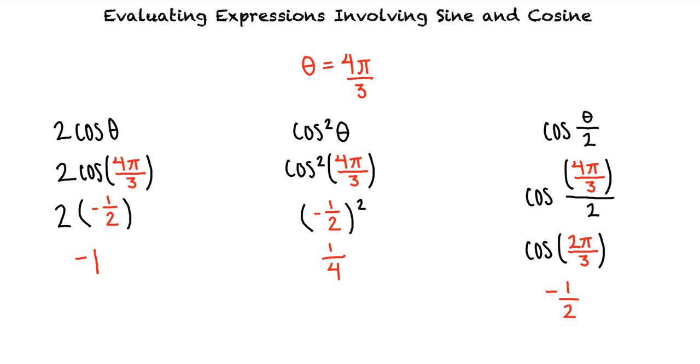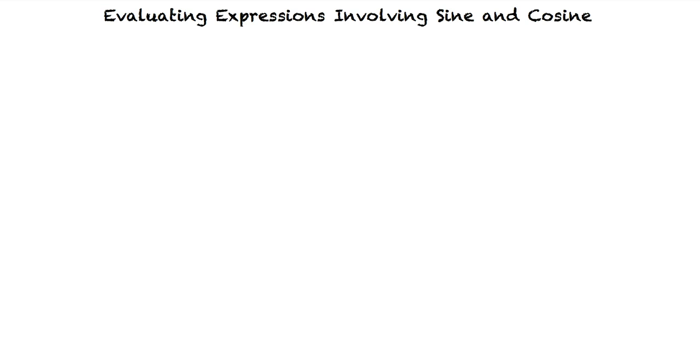I think that makes sense. Can we do an example using sine? Definitely. Let's say that θ equals π/6, and we want to find the exact values of sine 2θ, sine squared θ, and sine negative θ. We can substitute π/6 in for θ in each expression.